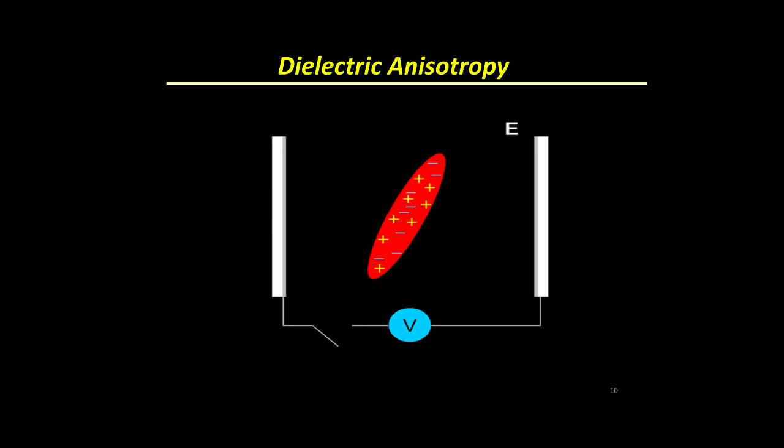The next property exhibited by liquid crystals is dielectric anisotropy. As mentioned, liquid crystal has a positive end as well as a negative end. When an electric field is applied to this liquid crystal, the electric field can change the orientation of the liquid crystal and thus affect its optical property. Liquid crystal materials that align either parallel or perpendicular to an applied field can be selected to suit particular applications.